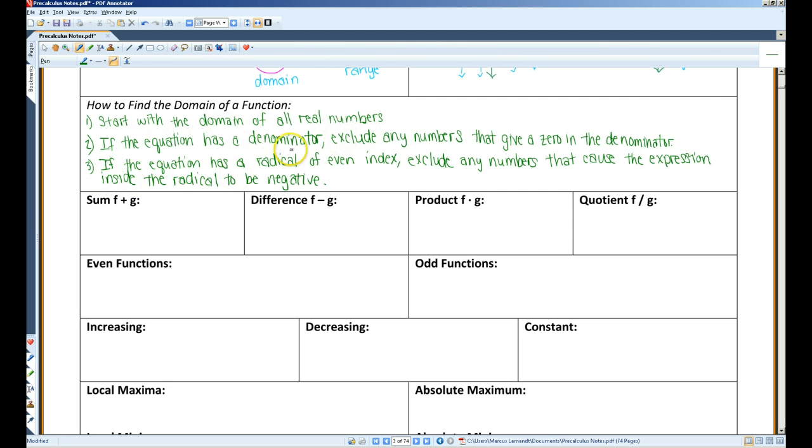If the equation has a denominator, exclude any numbers that give a zero in the denominator. Usually, if the equation has a denominator, I will take the denominator and set it equal to zero in order to find what x has to equal to make the denominator zero.